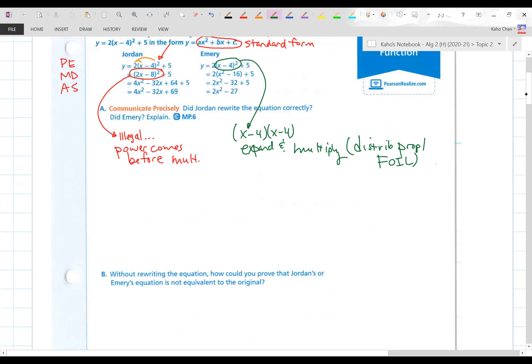Next question. Without rewriting the equation, how could you prove that Jordan's or Emery's equation is not equivalent to the original? Well, you can always substitute in values. Another thing you can do is graph the equations and compare.